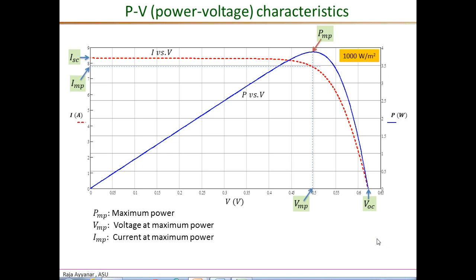This maximum power point changes with environmental conditions, and the objective of one of the control loops of a power converter is to ensure that operation is always at the corresponding correct maximum power point.